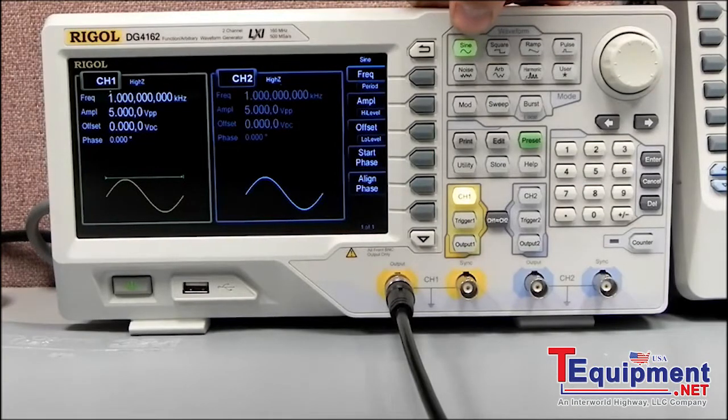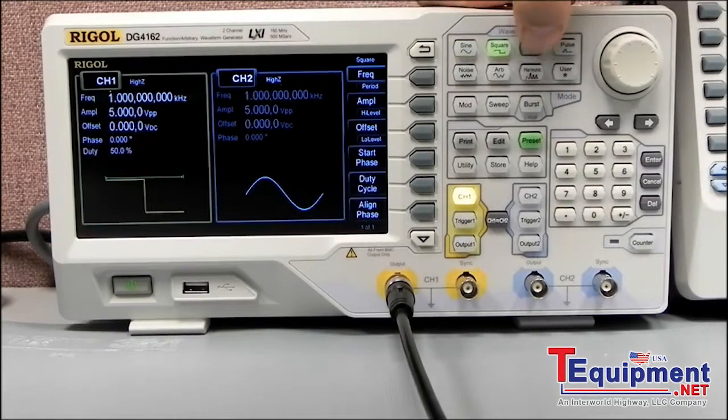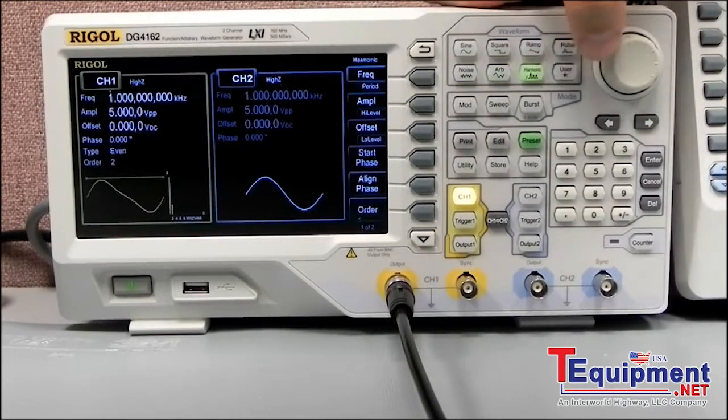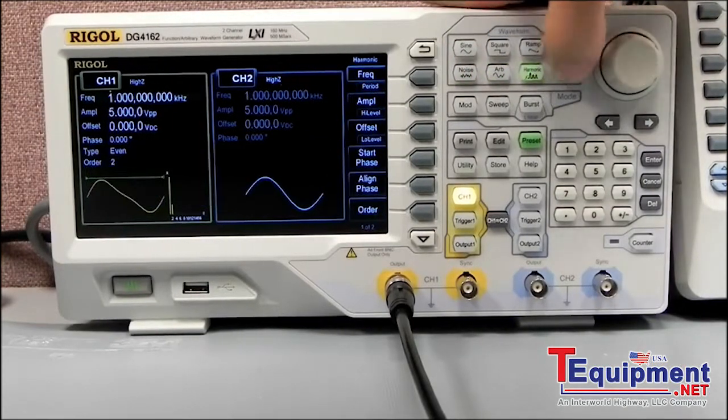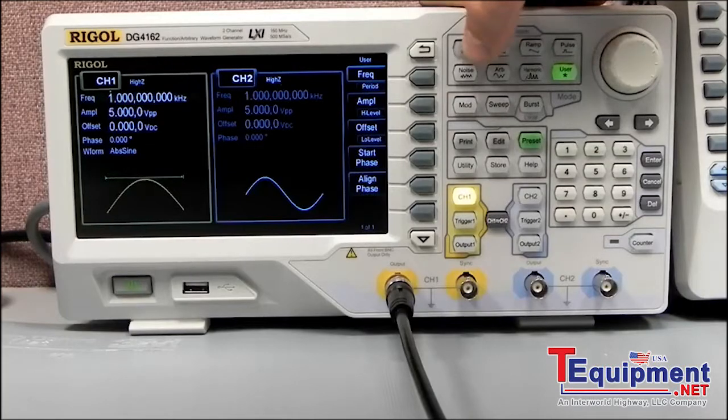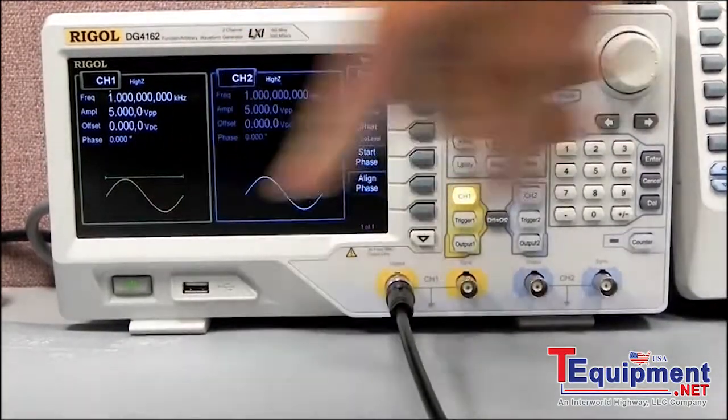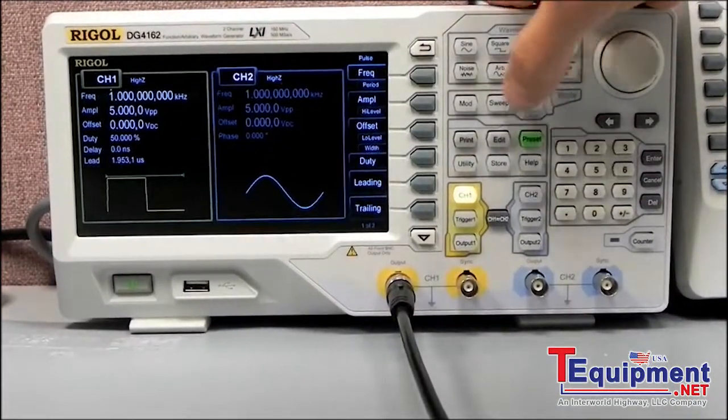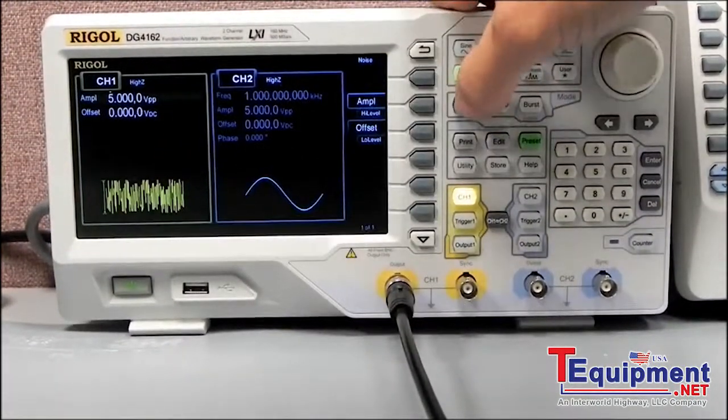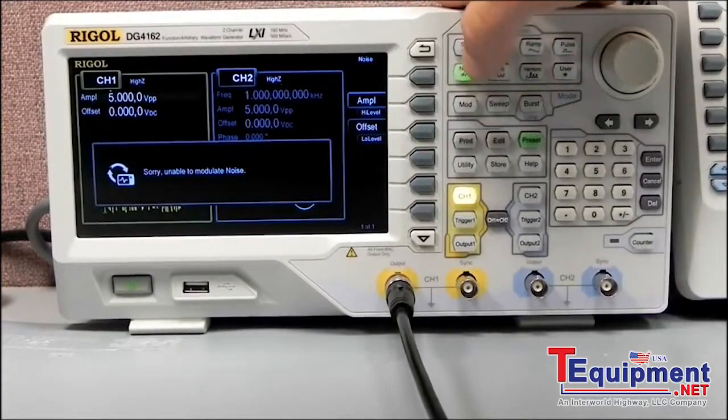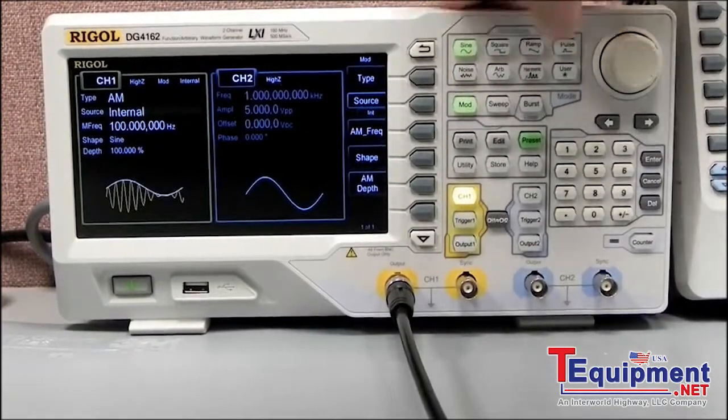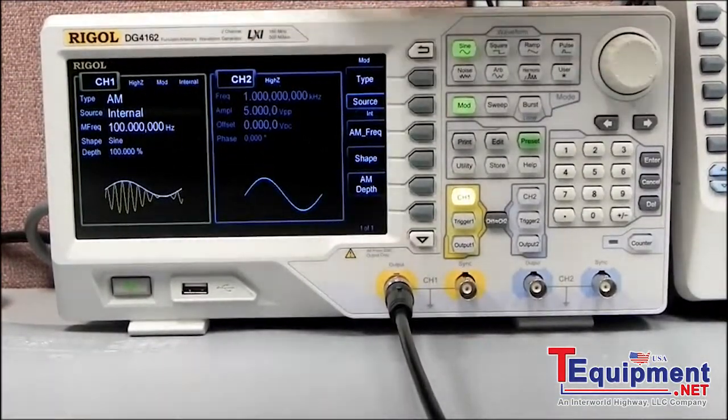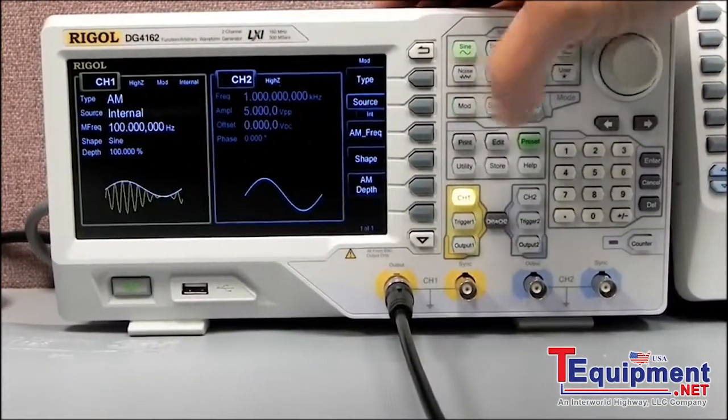Some of the standard waveforms that we have are sine, square, ramp, pulse, noise, ARB, harmonic (I'll explain a little bit more), and then user. You can define that button. You'll see on the display we see sine, square, ramp, pulse, etc. Each of the functions actually have a really nice descriptive picture to indicate exactly what type of waveform you're working with.